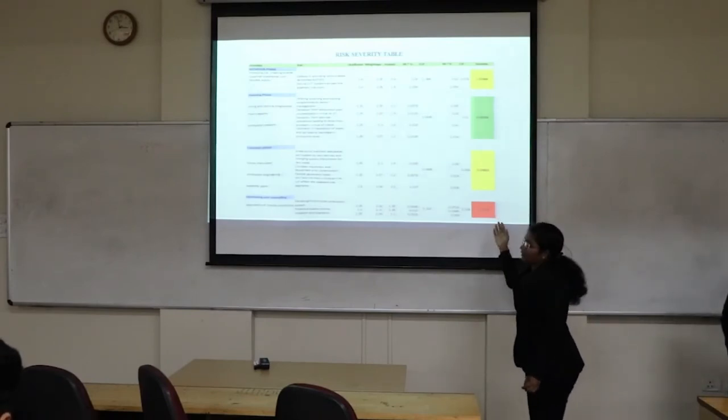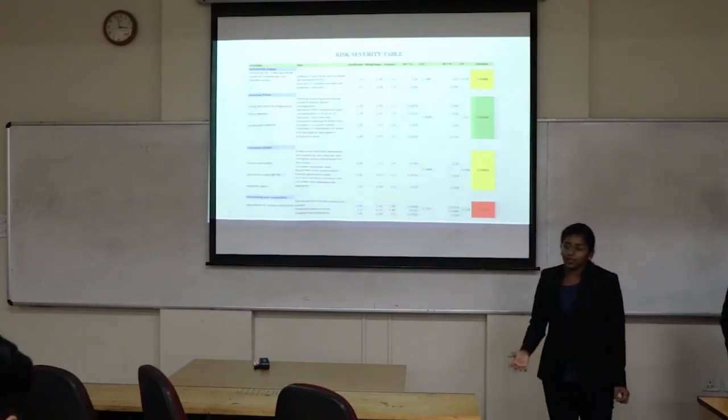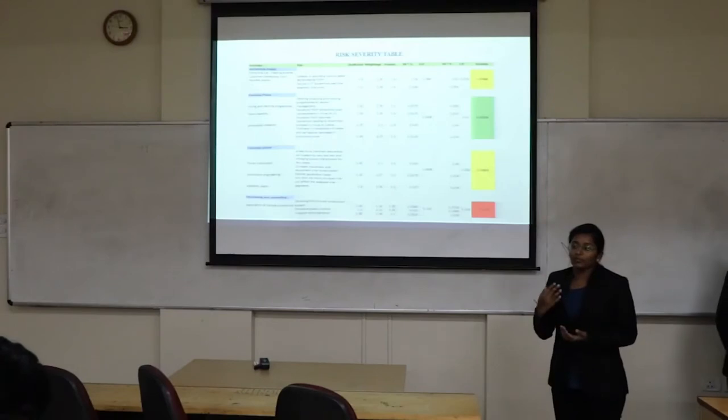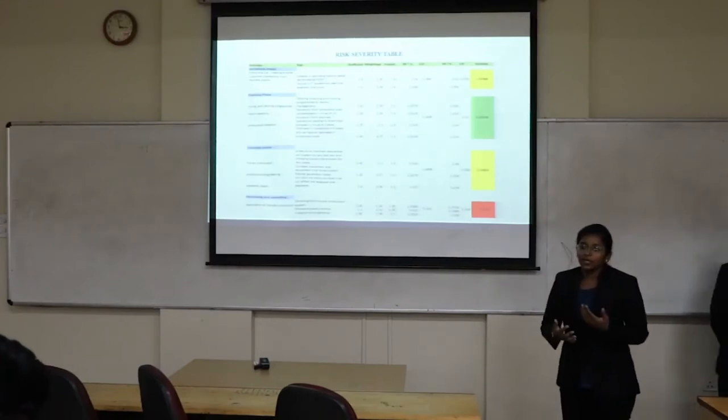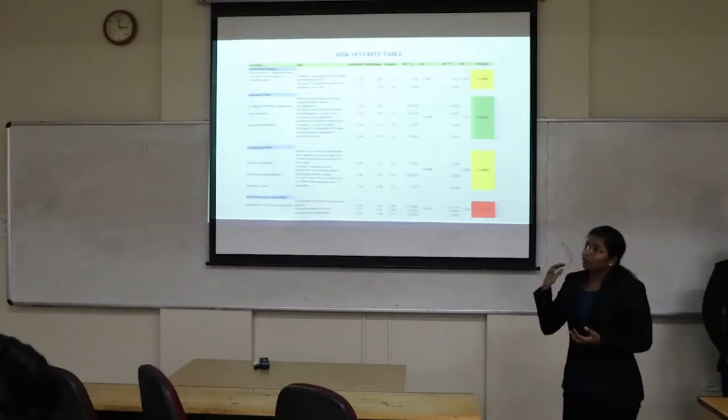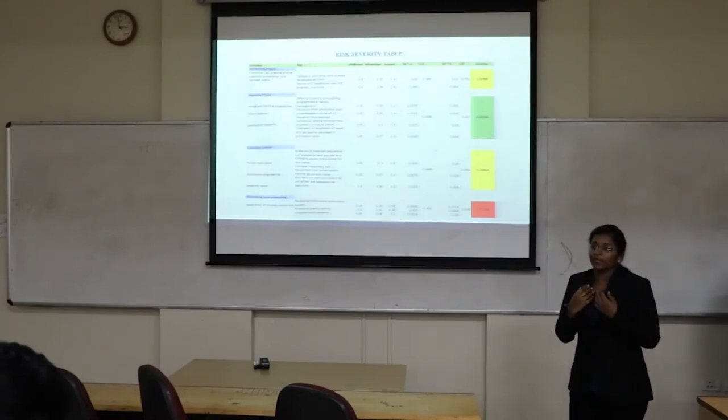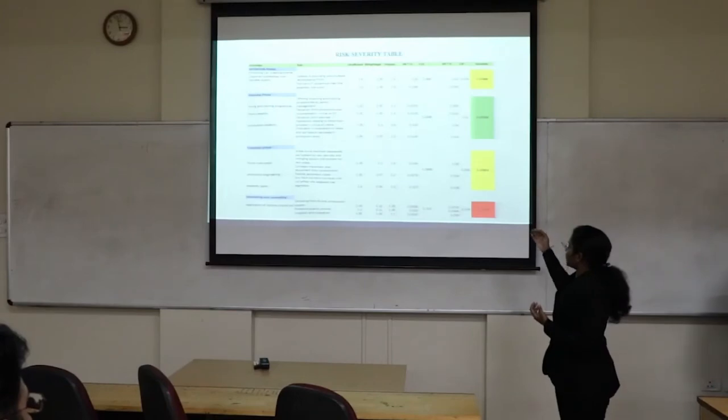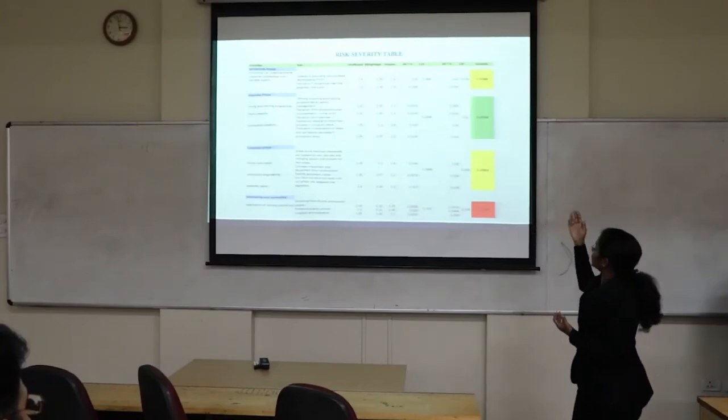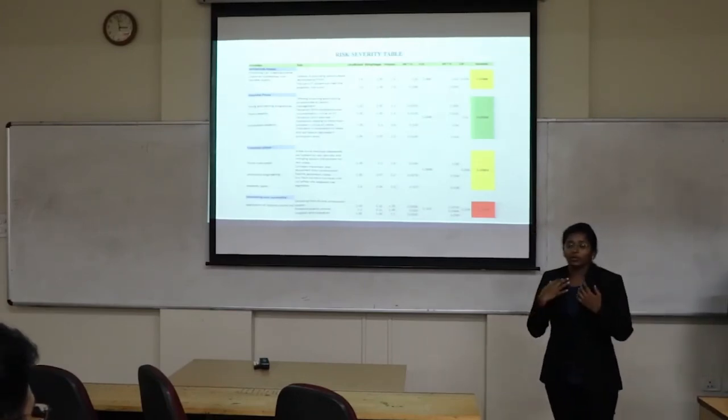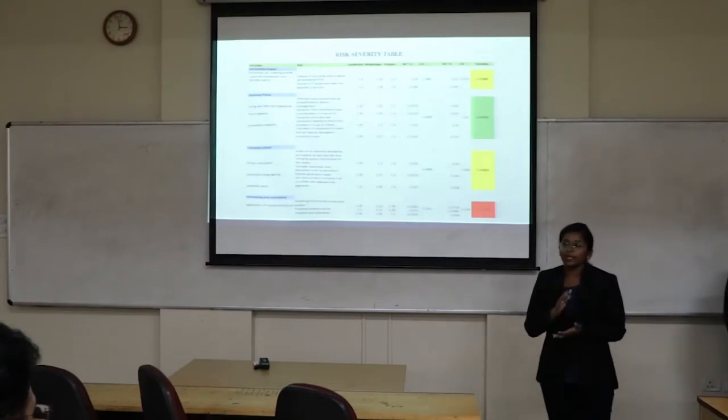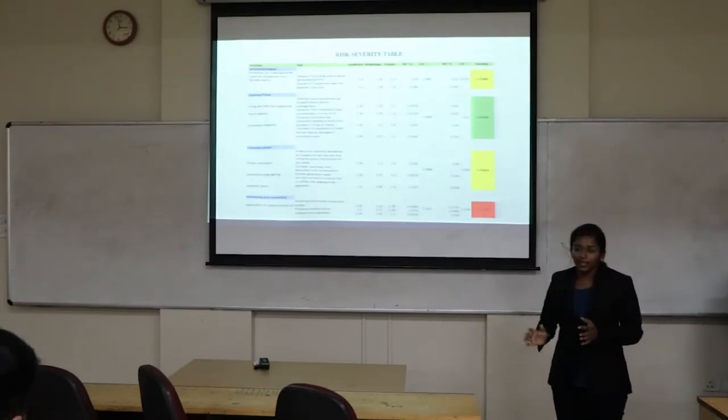The red means the risk is severe, a major risk. We have to take steps in order to reduce the risk. Yellow means minor risk. We can take steps to reduce the risk after we are done with the red one. Green means the minor one. We can actually avoid that risk if only the status of that particular risk changes.